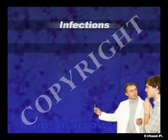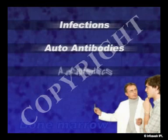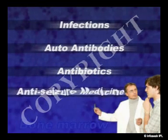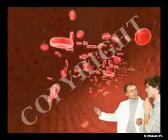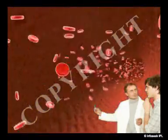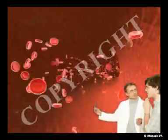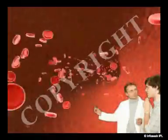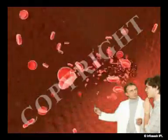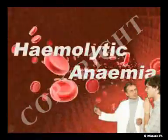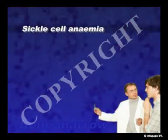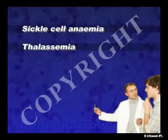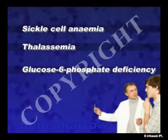Infections, autoantibodies, antibiotics, and anti-seizure medicines cause such anemia. Inherited defects in the red blood cells involving its structure, production of hemoglobin, or enzymes also cause excessive destruction resulting in hemolytic anemia. Common forms include sickle cell anemia, thalassemia, and glucose-6-phosphate deficiency.